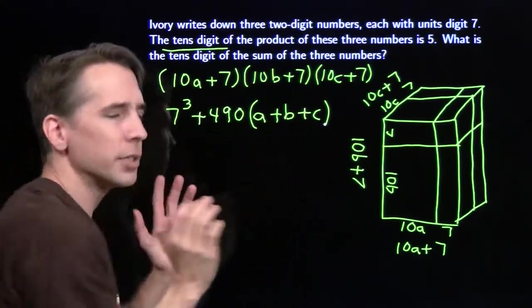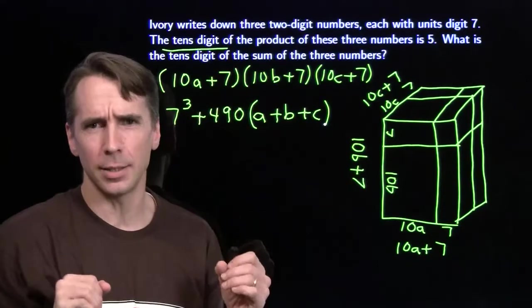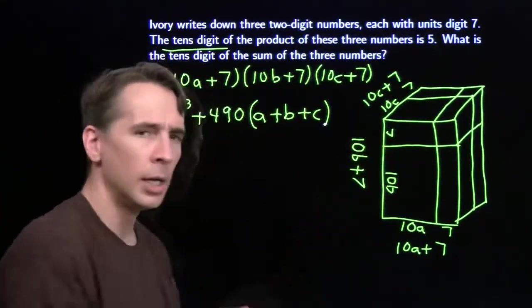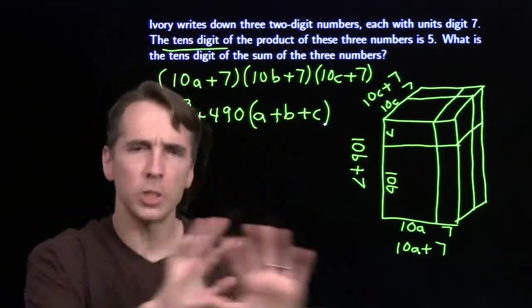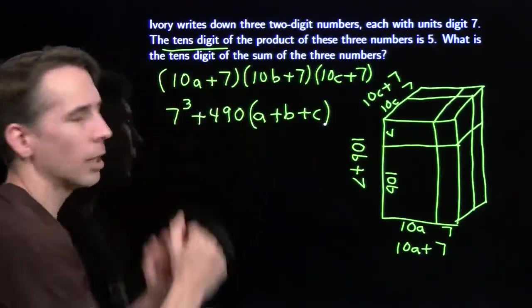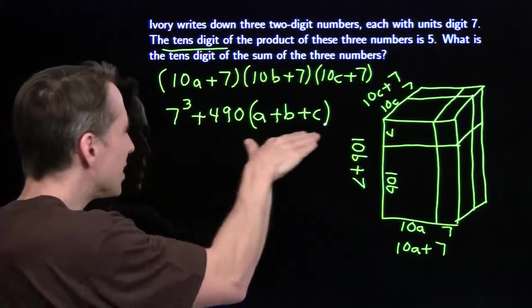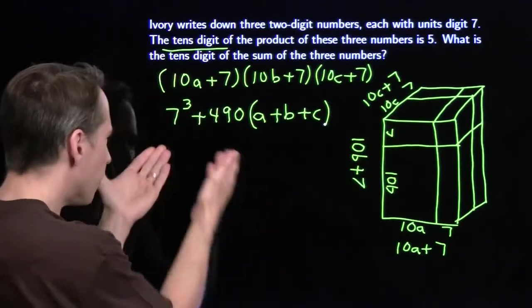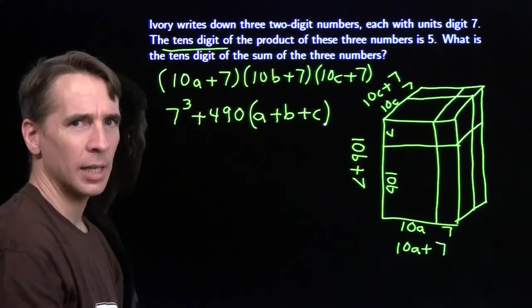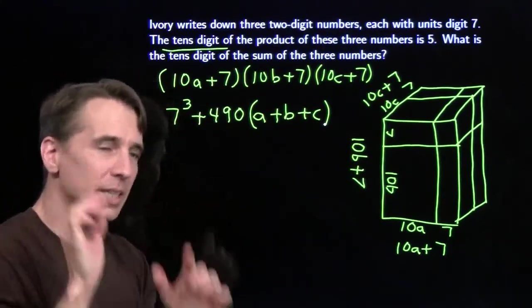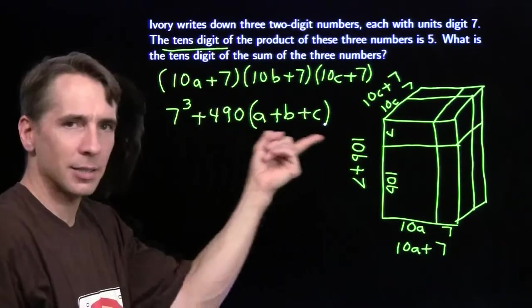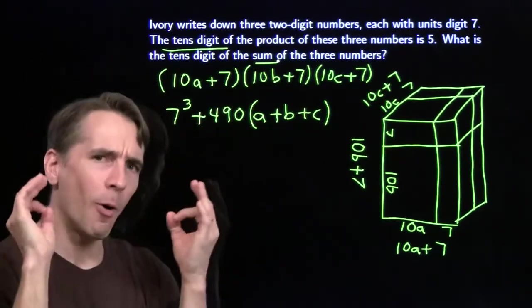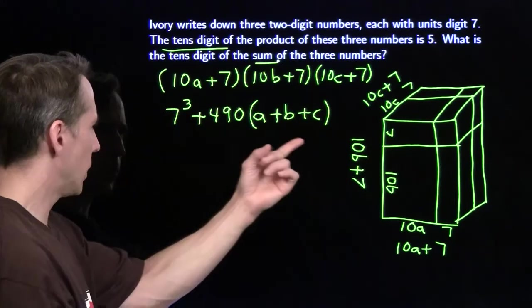So these are all the terms that are going to give us a tens digit that's not zero. All the rest will give us zero, so we don't care about them. So all the pieces in here that have a tens digit of zero in our volume, we just don't care about those. We only care about these. And we know that this expression here has tens digit equal to 5. So I have to figure out what's going to make the tens digit of this equal to 5. Now, one thing that's pretty exciting when I see this, is I see this sum right there, and I know that in the end I care about the sum. So I'm pretty excited. I think I'm on the right track.